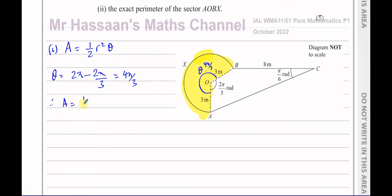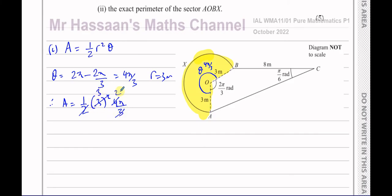Therefore the area equals ½ times R squared, where R = 3, times 4π/3. So: ½ × 9 × 4π/3. The 2 cancels with the 4 giving 2, and one of the 3s cancels from 3² and 3 giving 3 × 2 = 6. So the area is 6π metres squared.